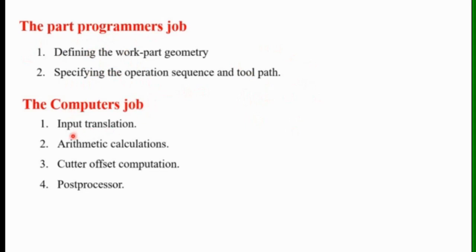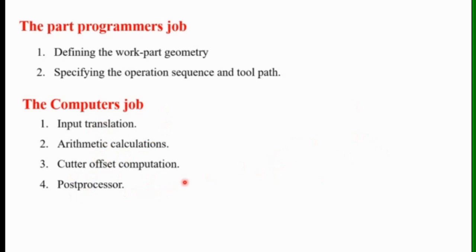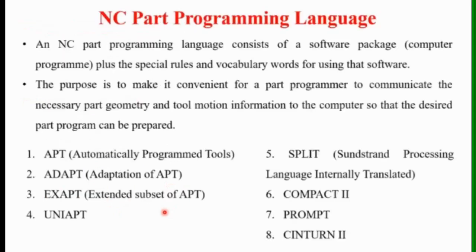The role of the Computer in this programming is input translation — whatever input data the Programmer feeds to the Computer, that data is translated into machine language. Then Arithmetic Calculations: the Programmer has given input data such as coordinates of points P1 and P2, requiring the tool to follow from one point to another. The computer performs those Arithmetic Calculations. Then Cutter Offset Computation — cutter tool offset computations are carried out in the computer. Post Processor Statements also have to be performed by the computer.